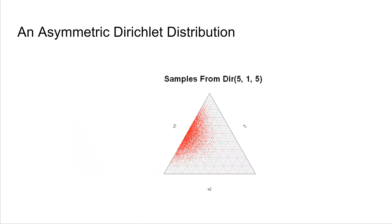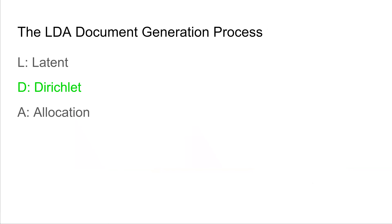We now investigate what happens when each component of the Dirichlet parameter is not equal. We see from the plot that this results in a Dirichlet distribution which is no longer symmetric about the center of the simplex. Now that we have given some background on the Dirichlet distribution, we begin discussing LDA, where the Dirichlet distribution plays a prominent role.